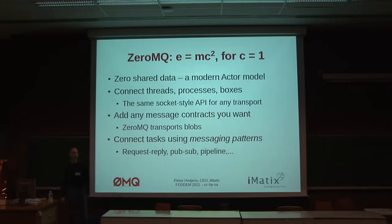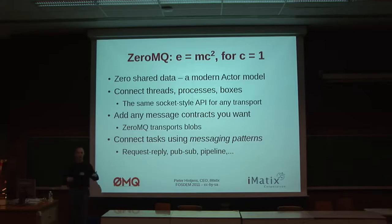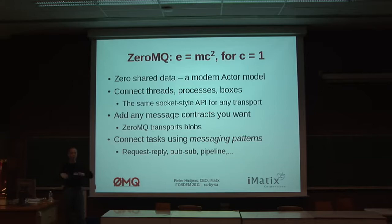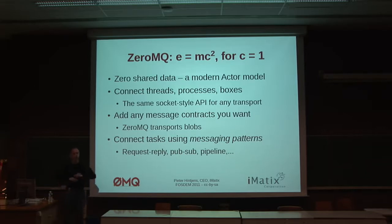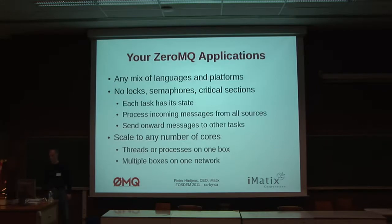My argument is that ZeroMQ gives you C equals one — you pay effort according to the mass of your program and that's it, yet you can build highly concurrent systems. You can connect threads to threads, threads to processes, processes to boxes, using the same API and the same model — basically a socket-style API where you say 'talk to this piece, send it messages' and it transports blobs. There's no notion in ZeroMQ about the message contracts — that's up to you as a developer. It has messaging patterns: pub-sub for distributing data, pipeline for distributing work, request-reply for reliability — three to five patterns covering 95% of all messaging.